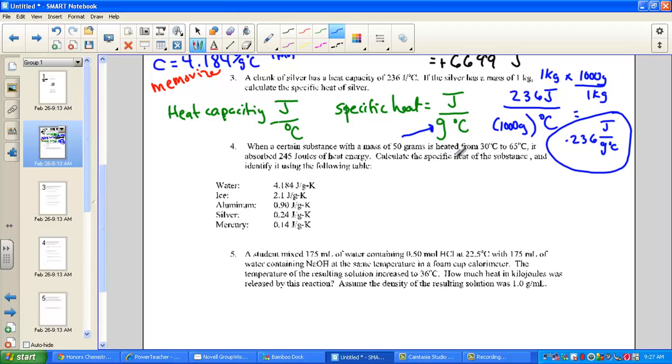When a certain substance has a mass of 50 grams, and it's heated from 30 degrees to 65 degrees, it absorbs 245 joules of heat energy. Calculate the specific heat. Once we have the specific heat, we can match it to the table of standards and find the substance. The mass variable is 50 grams. We're looking for specific heat. Delta T, well, it started at 65. 65 from 30, it changed by 35 degrees, the difference between 65 and 30. My M, my C, my delta T, set equal to heat energy, 245 joules.